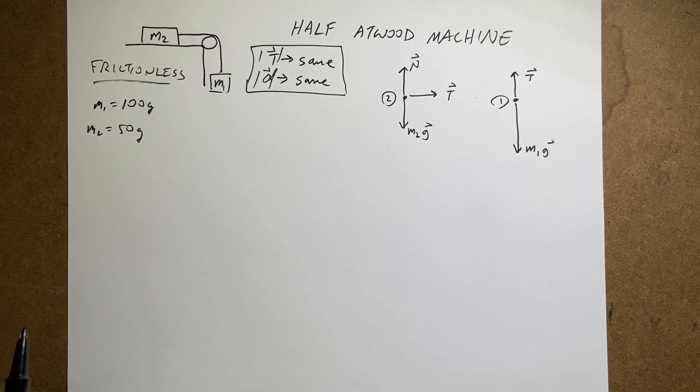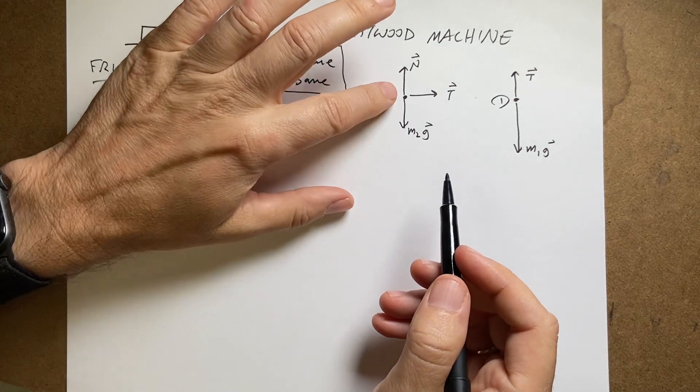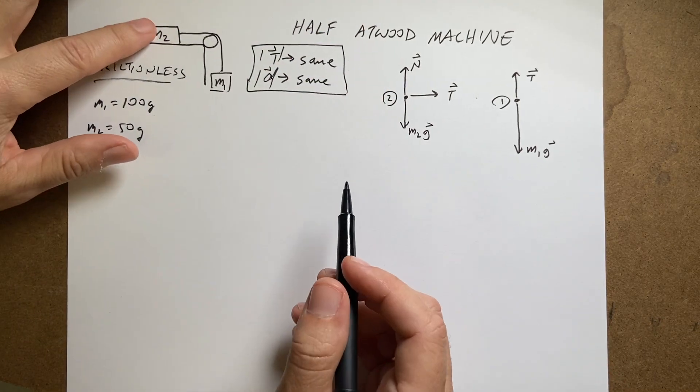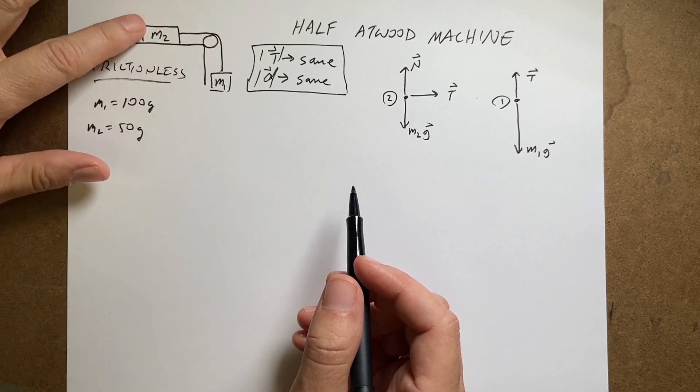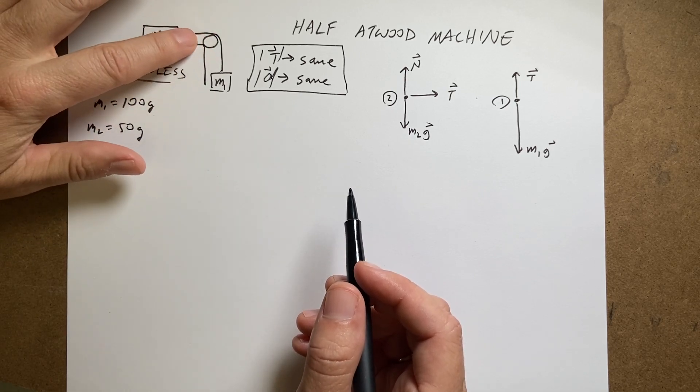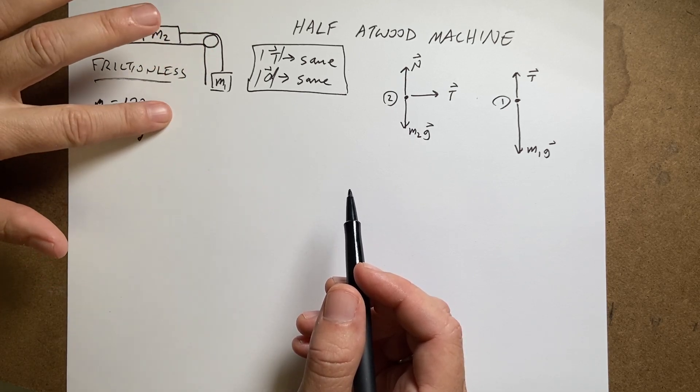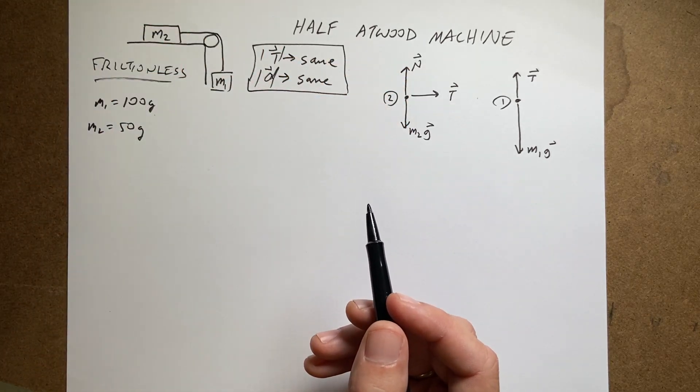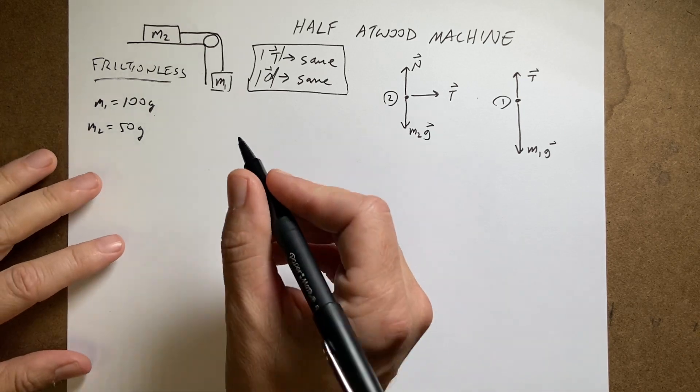Okay. Now I have these forces. I can go ahead and write my Newton's second law. If I look at the Newton's second law in the y direction for mass two, it doesn't really help. Because no matter what this mass is doing, it's going to move back and forth this way. The acceleration this way is going to be zero. So the sum of the forces in the y direction is going to be zero. I could write that down. I will. Fine.